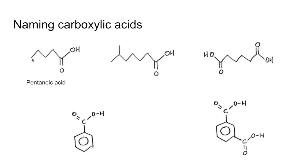The next one in the main chain has 1, 2, 3, 4, 5, 6, 7 carbons, so it's going to be heptanoic acid. And there's a methyl group — not at number 2 because that's carbon number 1. So this is 6-methyl-heptanoic acid.